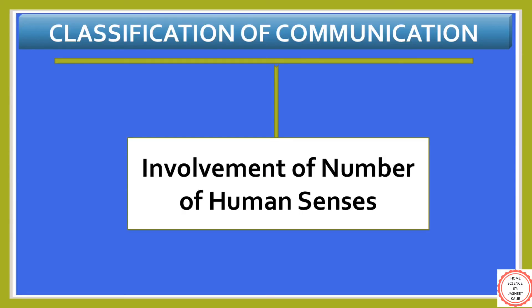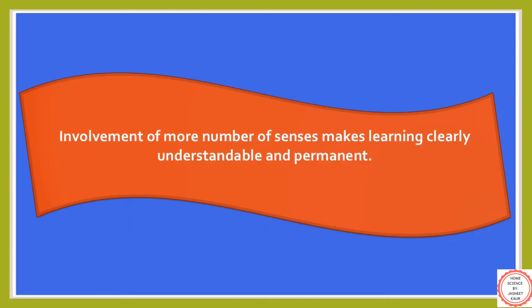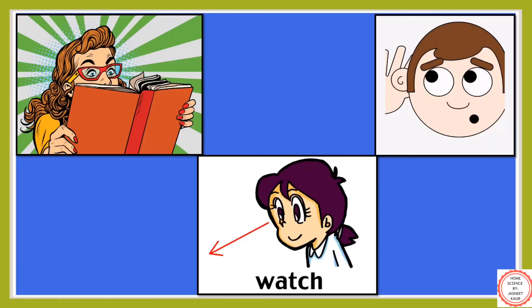The last classification of communication is on the basis of involvement of number of human senses. This type of classification focuses on involving more senses while learning any concept. For example, rather than studying a topic from a book, it is more effectively understood through videos or films, because while watching you involve more senses — you see, read, and listen simultaneously.